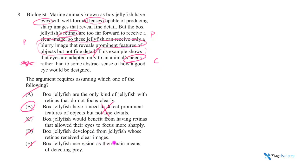Box jellyfish used vision as their main means of detecting prey. Okay, totally unnecessary. What if it's just a means of detecting prey? What if it's not even a means of detecting prey? What difference does that make?